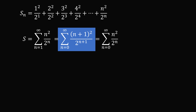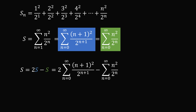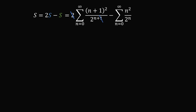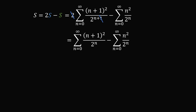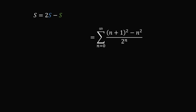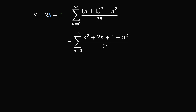From here, we're going to take 2 times the blue summation minus the green summation, which of course equals the original summation. So now we have 2 times the blue summation minus the green summation. The 2 will cancel out in the denominator, so now we have 2 to the power of n in both denominators. We group the summation with a common denominator, then simplify the numerator. We expand the binomial and cancel out the n squared terms. So we have the sum from n equals 0 to infinity of (2n + 1) all over 2 to the power of n.